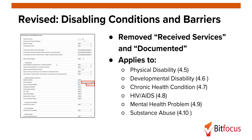Removal of the dependent fields applies to all disabling condition types: physical disability, developmental disability, chronic health condition, HIV/AIDS, mental health problem, and substance abuse. In addition to being removed from the standard enrollment screen, these dependent fields will also be removed from the standard status screen as well as the standard exit screen.